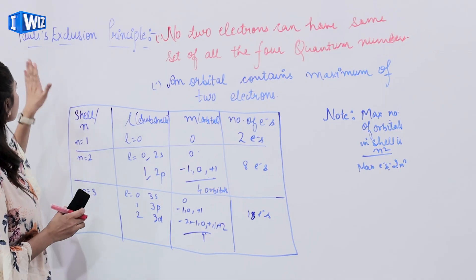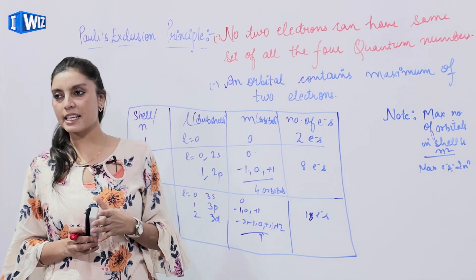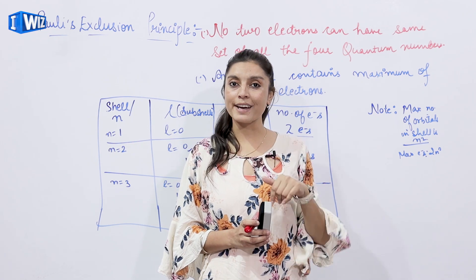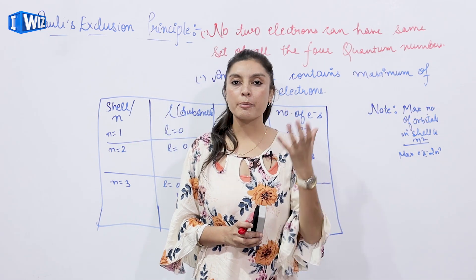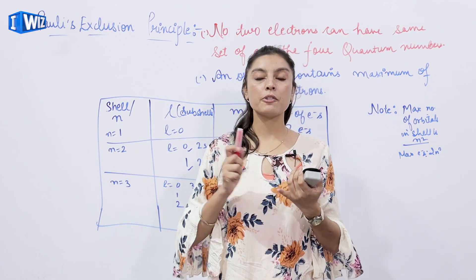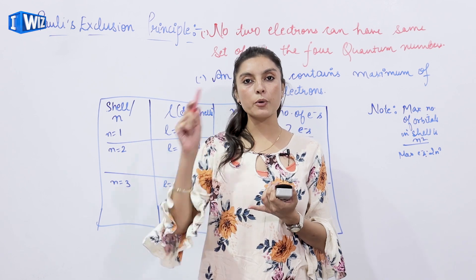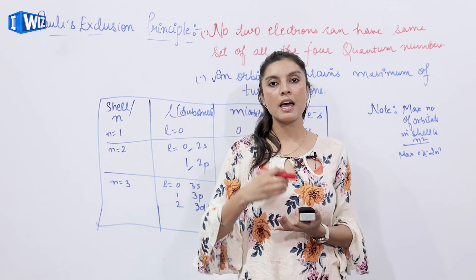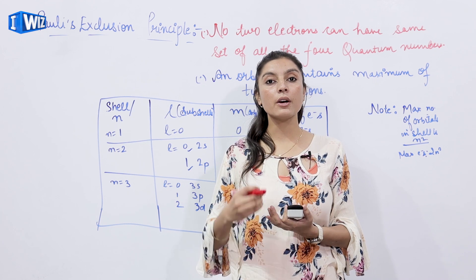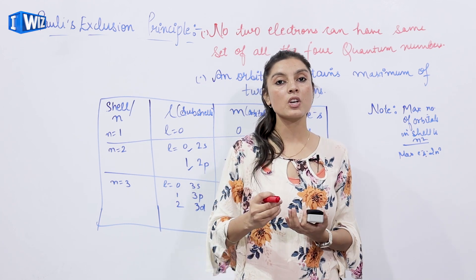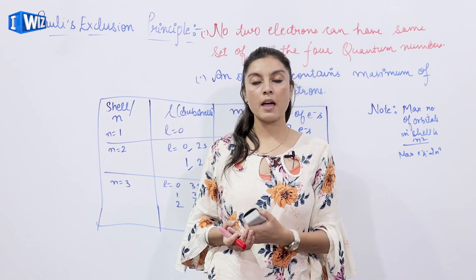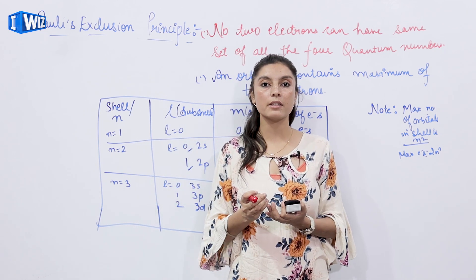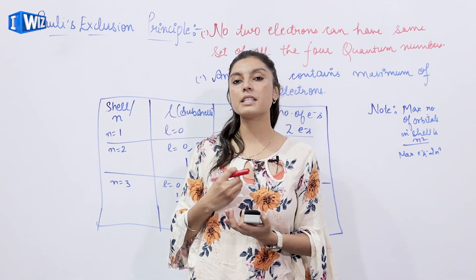Let's look at the statement of Pauli's Exclusion Principle: no two electrons can have the same set of all four quantum numbers. To revise, the four quantum numbers for a particular electron are: the first tells us about the outer motion; the second about the subshell; the third about the orbital in which the electron is present; and finally the spin — whether it is spinning in a clockwise or anti-clockwise manner.